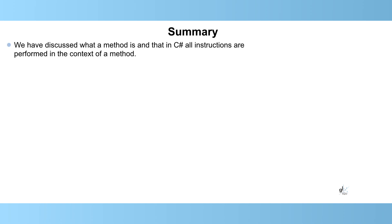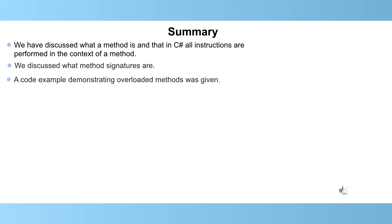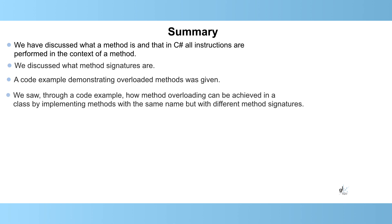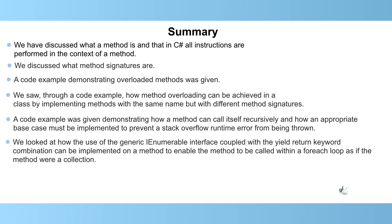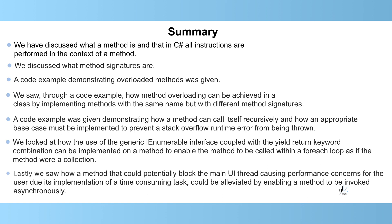We have discussed what a method is and that in C-sharp all instructions are performed in the context of a method. We discussed method signatures, demonstrated overloaded methods, showed how recursion works and why an appropriate base case is needed to prevent a stack overflow runtime error. We looked at how the generic IEnumerable interface coupled with the yield-return keyword combination enables a method to be used within a for-each loop as if it were a collection, and how asynchronous methods prevent blocking the main UI thread during time-consuming tasks.